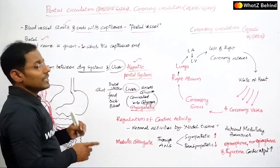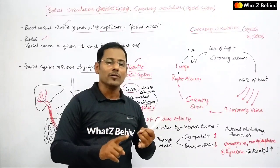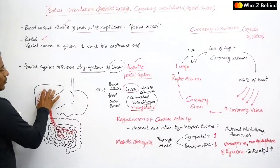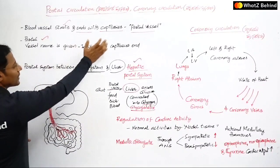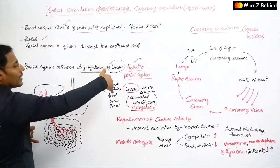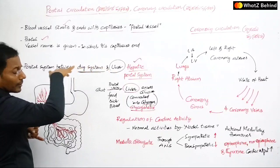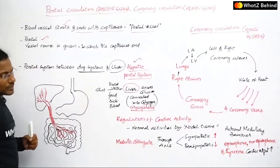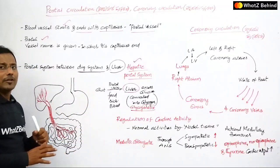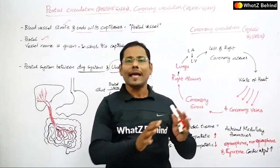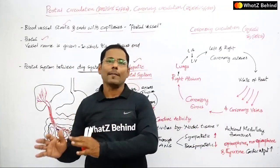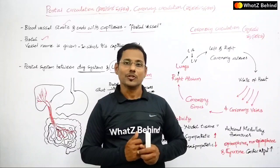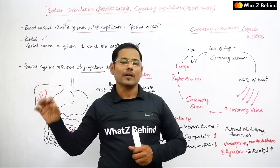The liver receives multiple types of blood: deoxygenated blood (carbon dioxide-rich), nutrient-rich blood from the portal system. The liver then sends blood back through blood vessels. The oxygenated blood energy is purchased back. So the hepatic portal system is very simple — it is a system where blood vessels start with capillaries and end with capillaries.